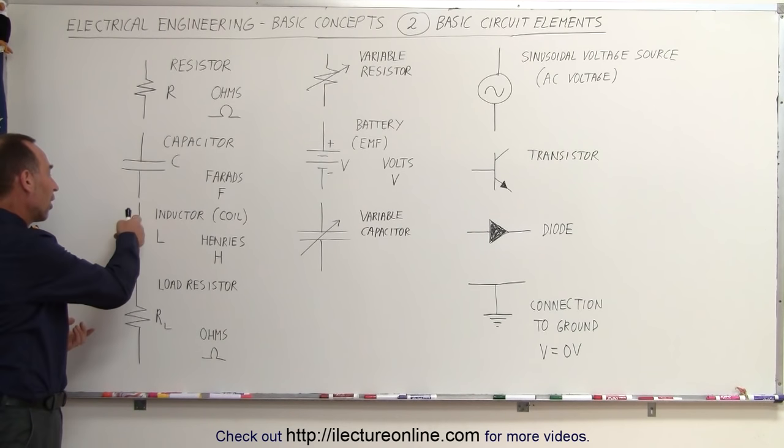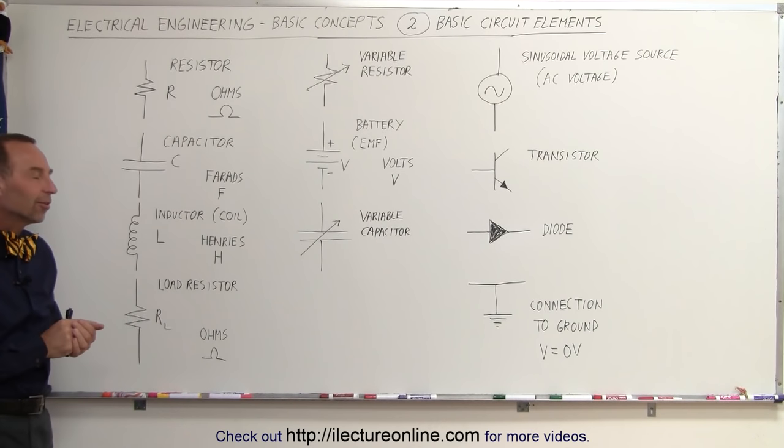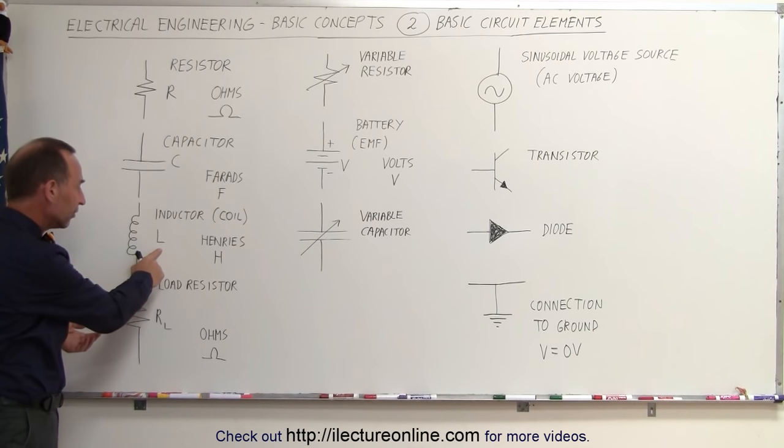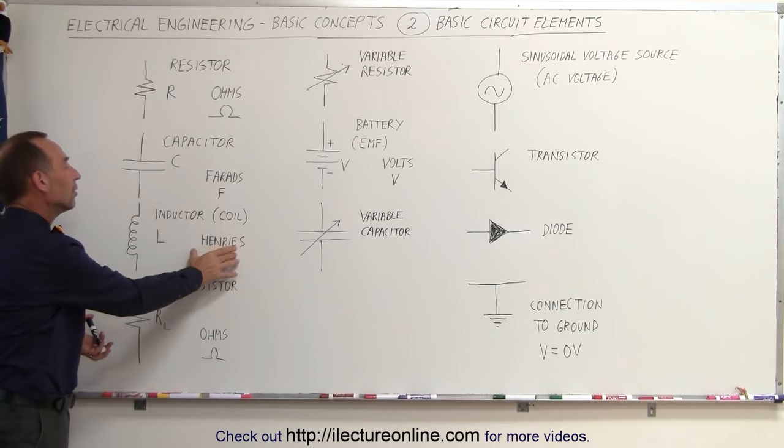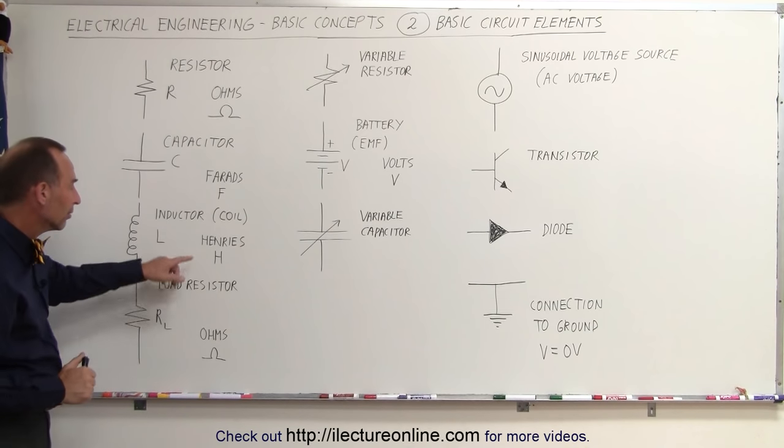Inductors, or coils, are drawn like little springs like that on the side. L stands for inductance, and the units we have for inductance is Henrys. We use the letter H for Henrys.